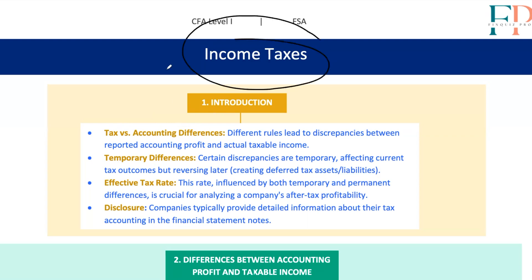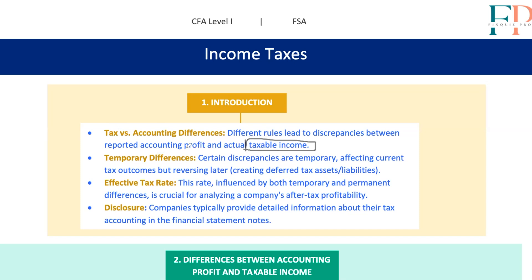Hey folks, today we're going to tackle a topic that's absolutely crucial for your CFA Level 1 exam, and for your careers in finance too. We're diving into the nitty-gritty of the differences between accounting profit and taxable income, and how that leads us into the world of deferred tax assets and liabilities. I know taxes might not be the most thrilling subject, but stick with me. We'll make sense of it together, and I'll throw in some real-world examples to keep things grounded.